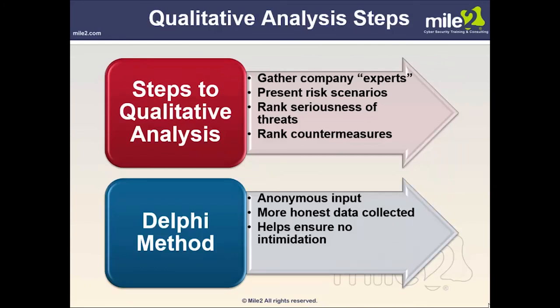Steps for qualitative analysis: gather company experts, present risk scenarios, rank the seriousness of threats, and rank countermeasures — typically using a numeric scale such as 1 to 5 or 1 to 6. The Delphi method allows anonymous input, which generally produces more honest data and helps ensure there is no intimidation influencing the results.